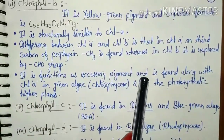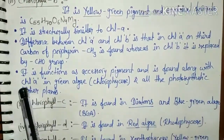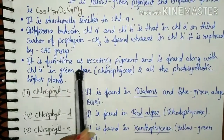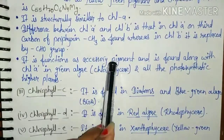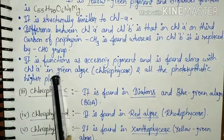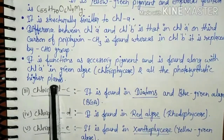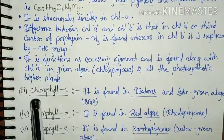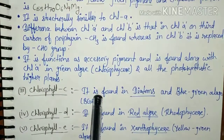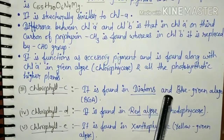Other structures are similar in both. The function of chlorophyll B is as an accessory pigment, and it is found along with chlorophyll A. Chlorophyll A is the universal photosynthetic pigment, but chlorophyll B is an accessory pigment because it is always found along with chlorophyll A in green algae and all photosynthetic higher plants.